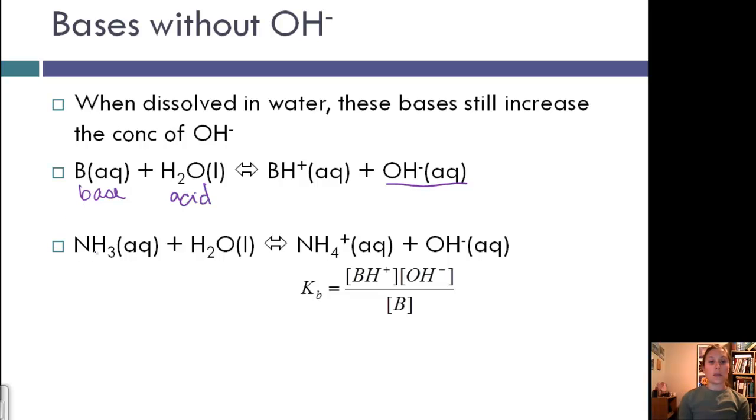For example, we can take ammonia plus water and produce the ammonium ion and the hydroxide ion. And we can write the equilibrium constant for bases. Instead of Ka, we're doing Kb, but it's the same general idea. Here are our products from our overall reaction, and here's our reaction, remembering that we are not including water.